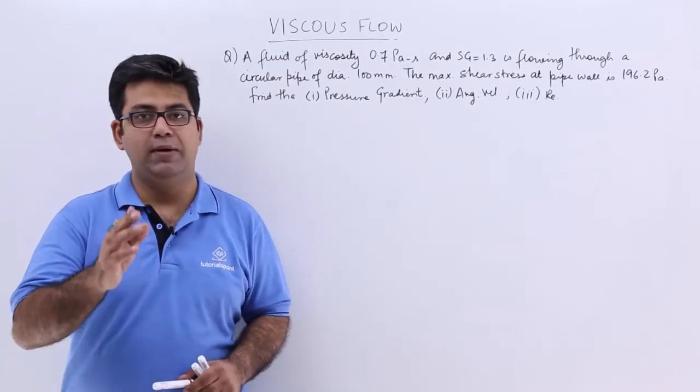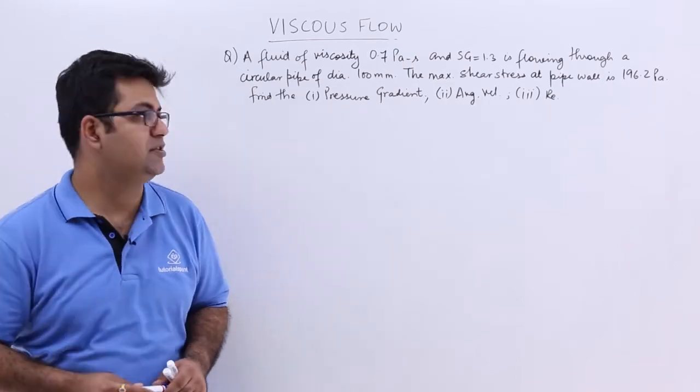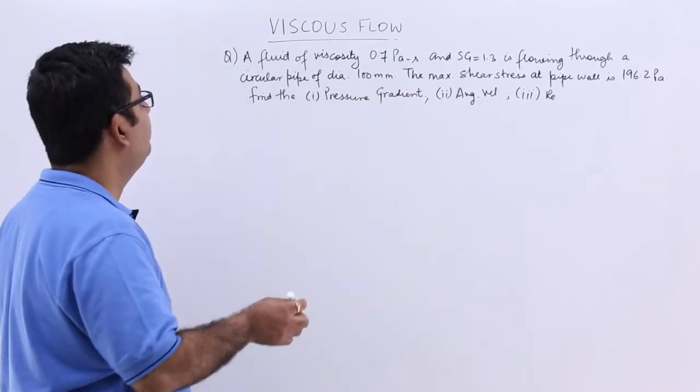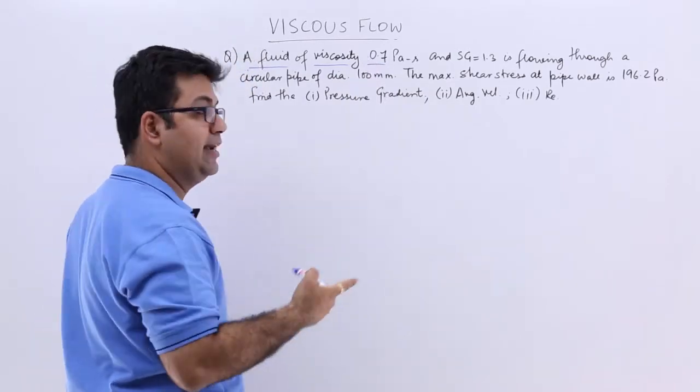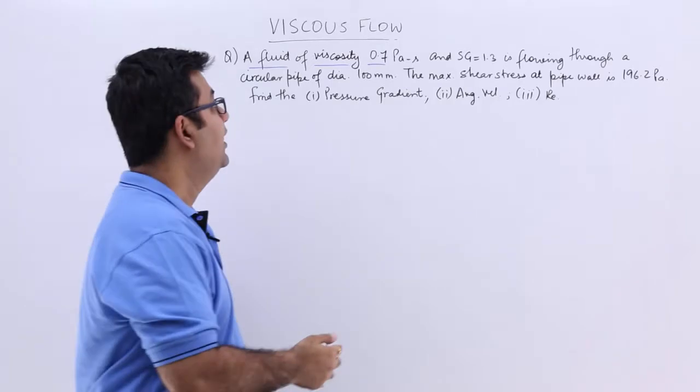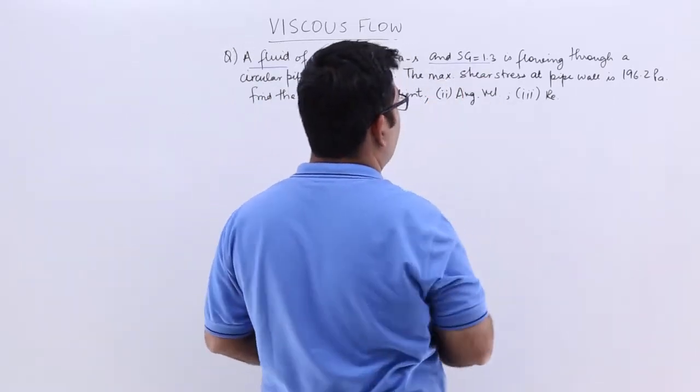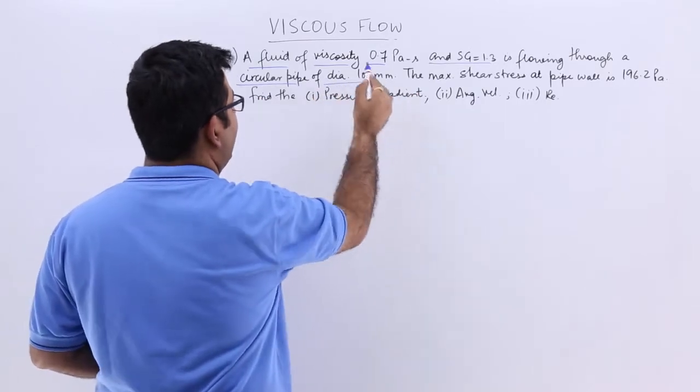Now let's look at one more numerical on the concept of the Hagen-Poiseuille's equation. The question says that we have a fluid of viscosity 0.7 pascal second, that's newton seconds per meter square, and the specific gravity is 1.3. It is flowing through a circular pipe of diameter 100 mm.